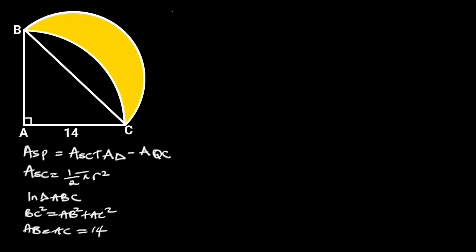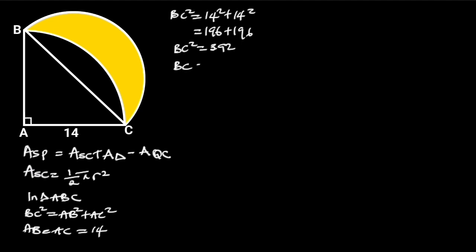Substituting this value gives us BC squared equals 14 squared plus 14 squared. 14 squared is equal to 196, and 196 plus 196 is equal to 392. So BC squared is equal to 392. Taking the square root of both sides gives us BC equals 14 root 2.